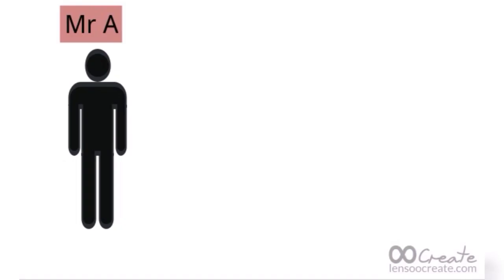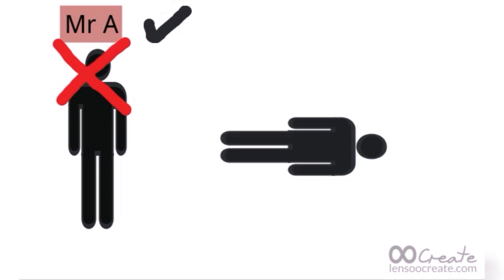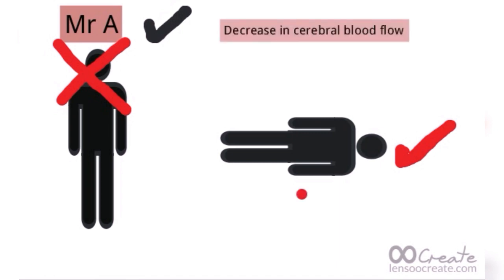Imagine this is Mr. A, and a sudden syncope occurs. Mr. A is going to lose his consciousness, but he regains consciousness when he lies in a horizontal plane. The mechanism of syncope is a decrease in cerebral blood flow.